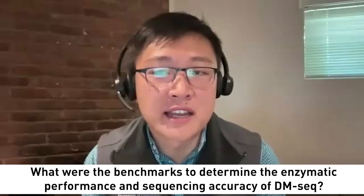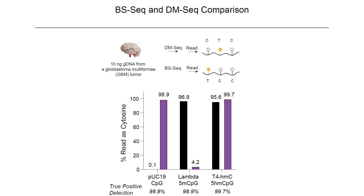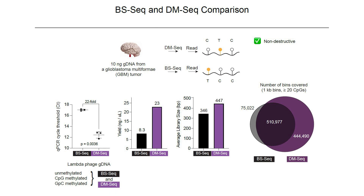We're very proud of how we decided to benchmark DM-seq against bisulfite sequencing, the legacy method. In one experiment, we actually took 10 nanograms of DNA from a glioblastoma tumor, and did matched bisulfite and direct methylation sequencing. We show by the most rigorous spike-in controls that we achieve over 99% fidelity for mapping each of the major modified bases. We also show that DM-seq preserves DNA relative to bisulfite sequencing by both qPCR as well as total DNA yield. Average library size tends to be over 100 base pairs larger, with over a six-fold advantage in covering new unique regions by DM-seq relative to bisulfite sequencing.